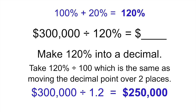$300,000 divided by 1.2 equals $250,000. So the original price that Janet paid eight years ago was $250,000. This is a very typical, really good test question, and we're going to do it again with different numbers so you can practice. Feel free to go through this video again — this is a great question to help you pass this test.